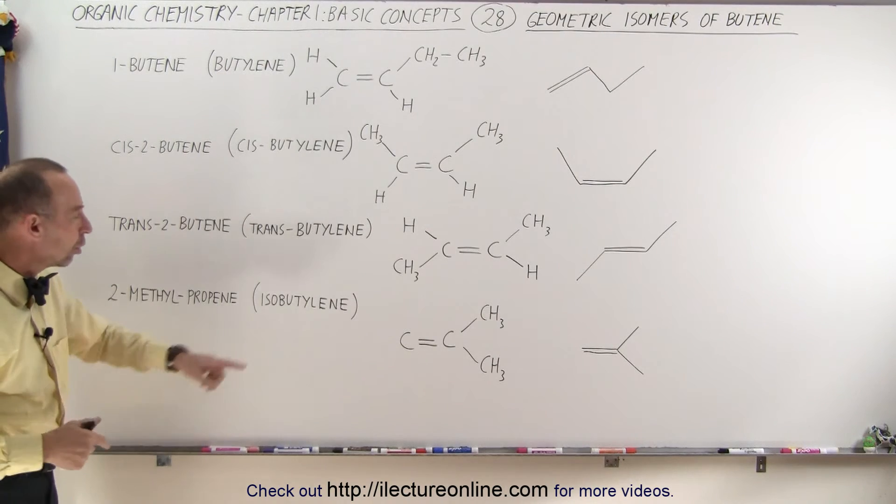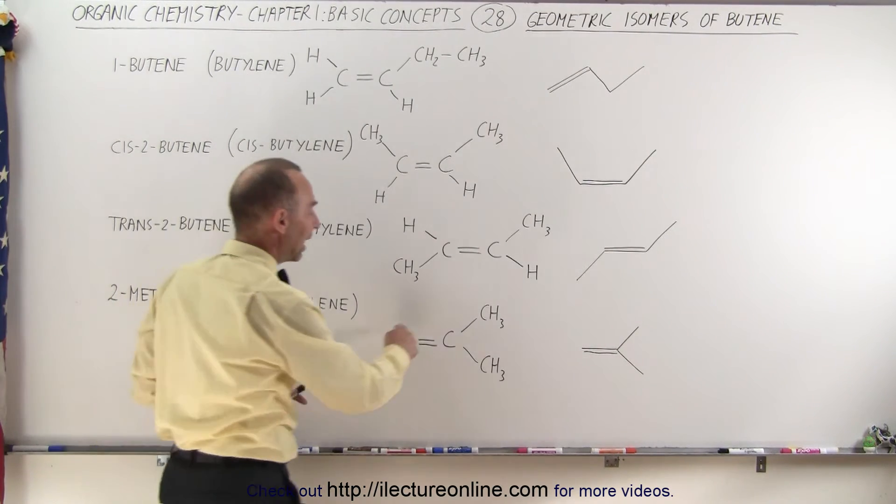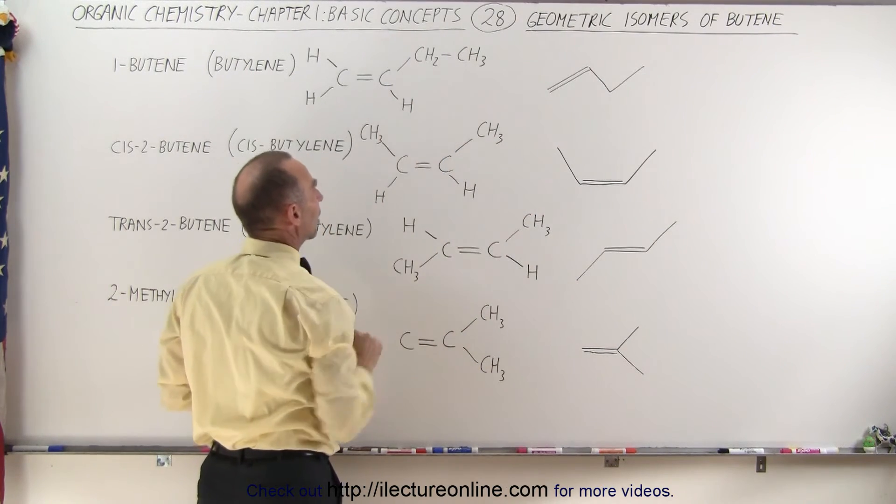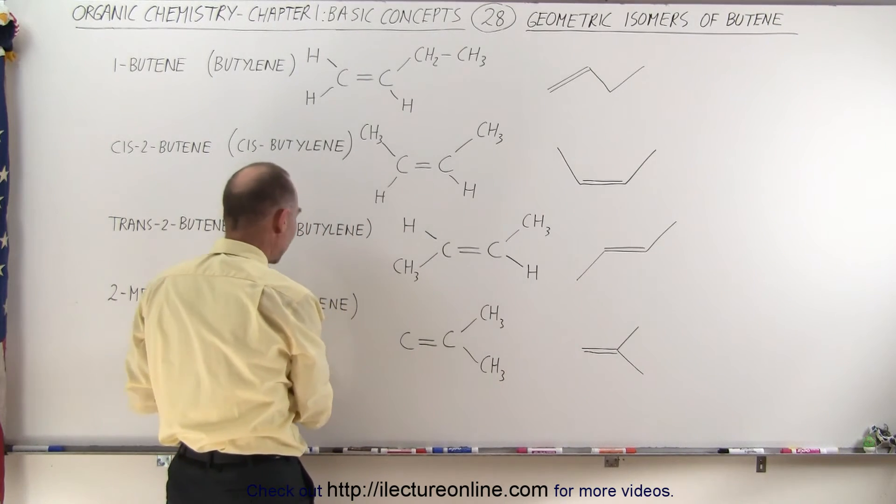But the common name is called isobutylene. Because we have four carbons, just like all the other four carbon chains, we can call that a butene or in this case an isobutylene.